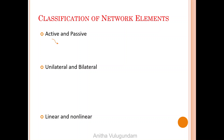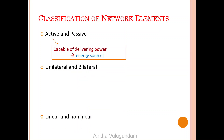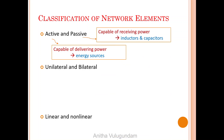Active elements are capable of delivering power. Examples are energy sources like voltage source and current source. Passive elements are those which are capable only of receiving power. Examples are inductors and capacitors, which are capable of storing a finite amount of energy and returning it later to an external element. Resistors, capacitors and inductors have the quality that they cannot supply average power greater than zero over an infinite interval.